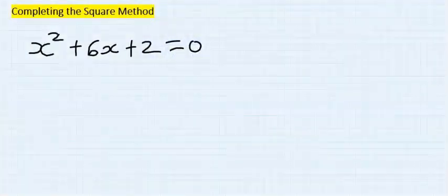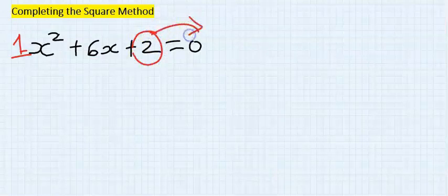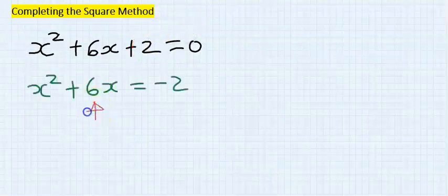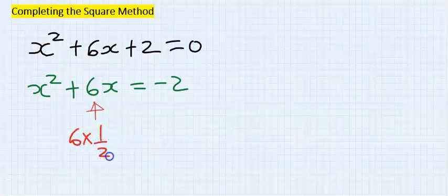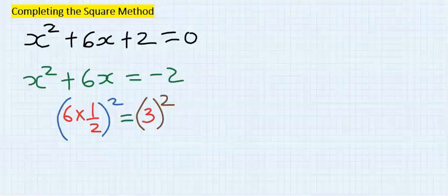In this problem the coefficient of x squared is already one, so we move directly to step two by taking the constant across. Next, take the coefficient of x, which is six, multiply by one half, then square both. This is completing the square.